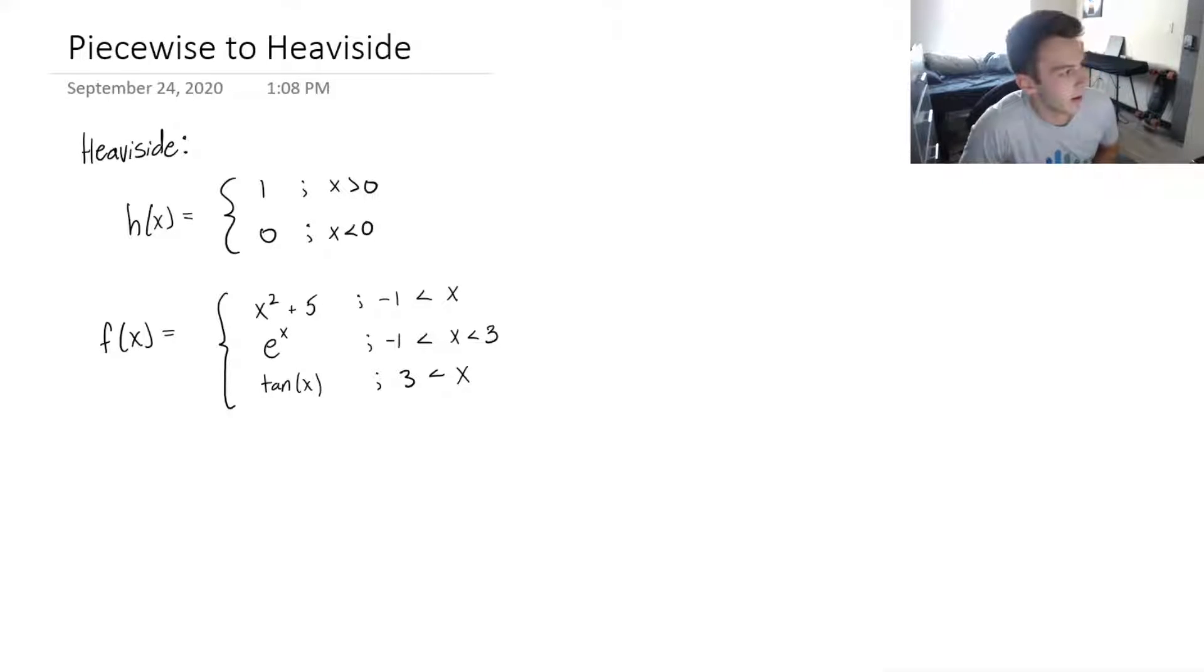I wanted to make a quick video on how to convert a piecewise function to a Heaviside function. Remember, a Heaviside function is just that on-and-off switch function. I'm kind of assuming you guys already understand that, and I want to show you a shortcut or trick that makes it so easy. It applies to every function you're ever going to deal with, and you just do this one trick and it's always going to work.